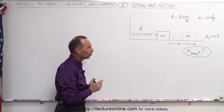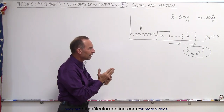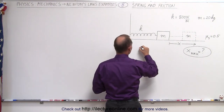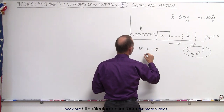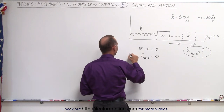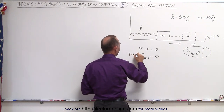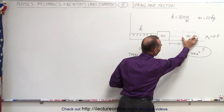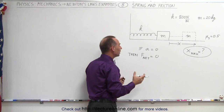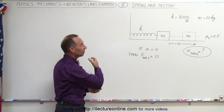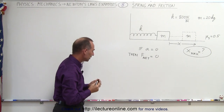How do we figure that out? When nothing is moving, acceleration is equal to zero, which means the net force must also equal zero. We're going to identify all the forces acting on the mass when it's extended, and then see what conditions must be met so that the object will not start accelerating back towards its equilibrium point.